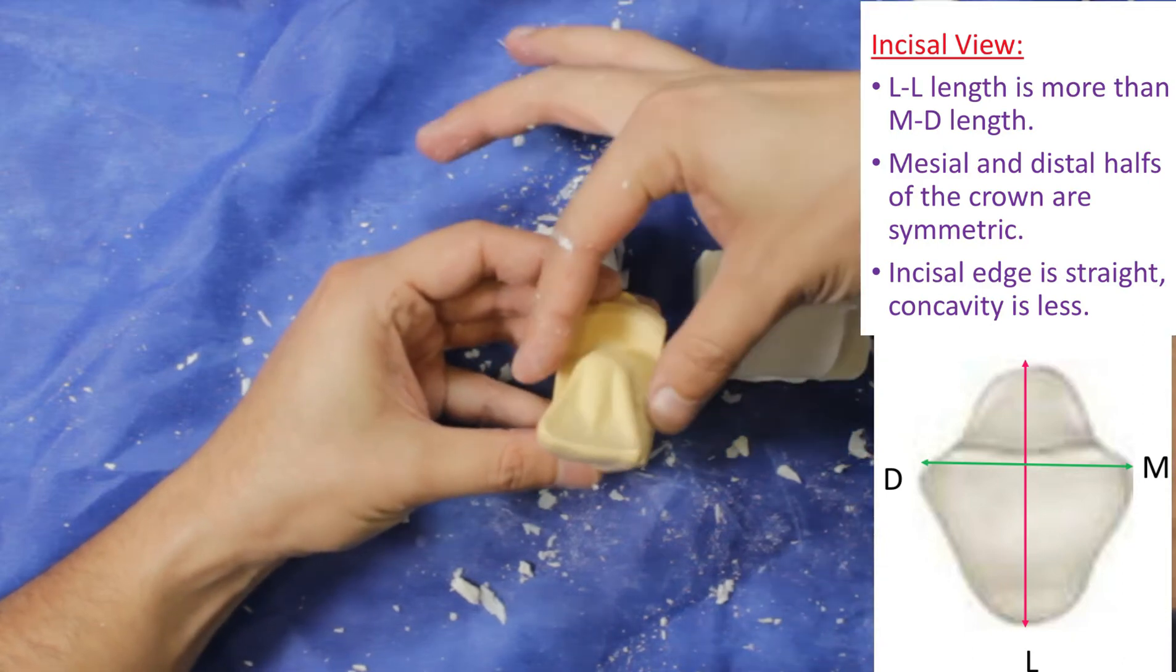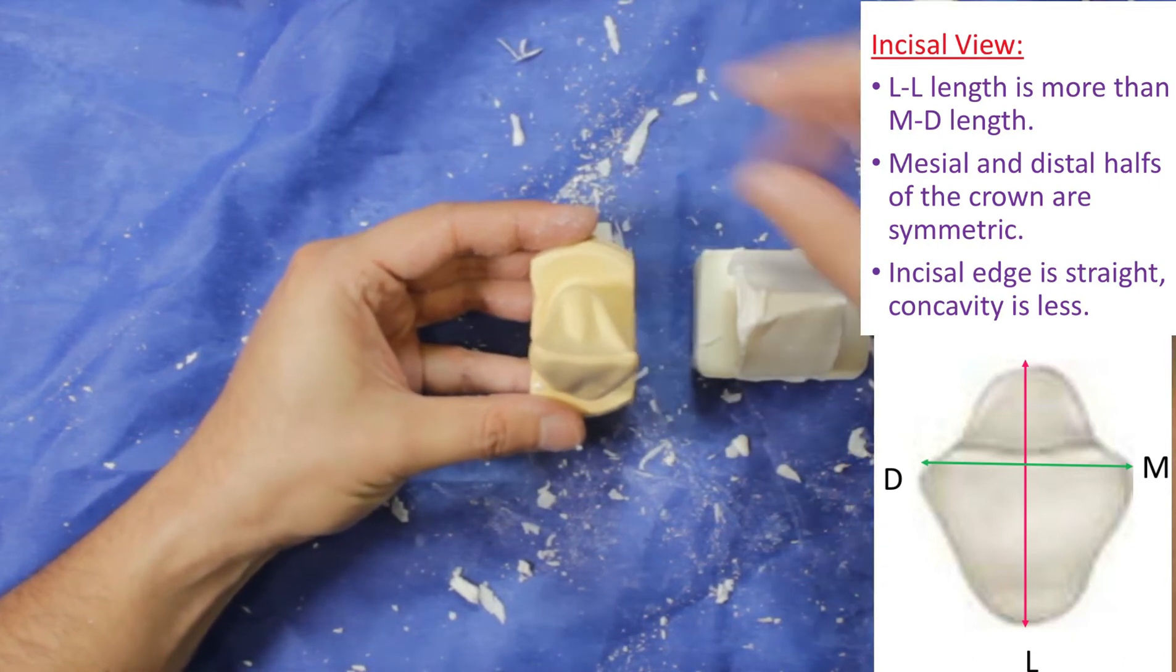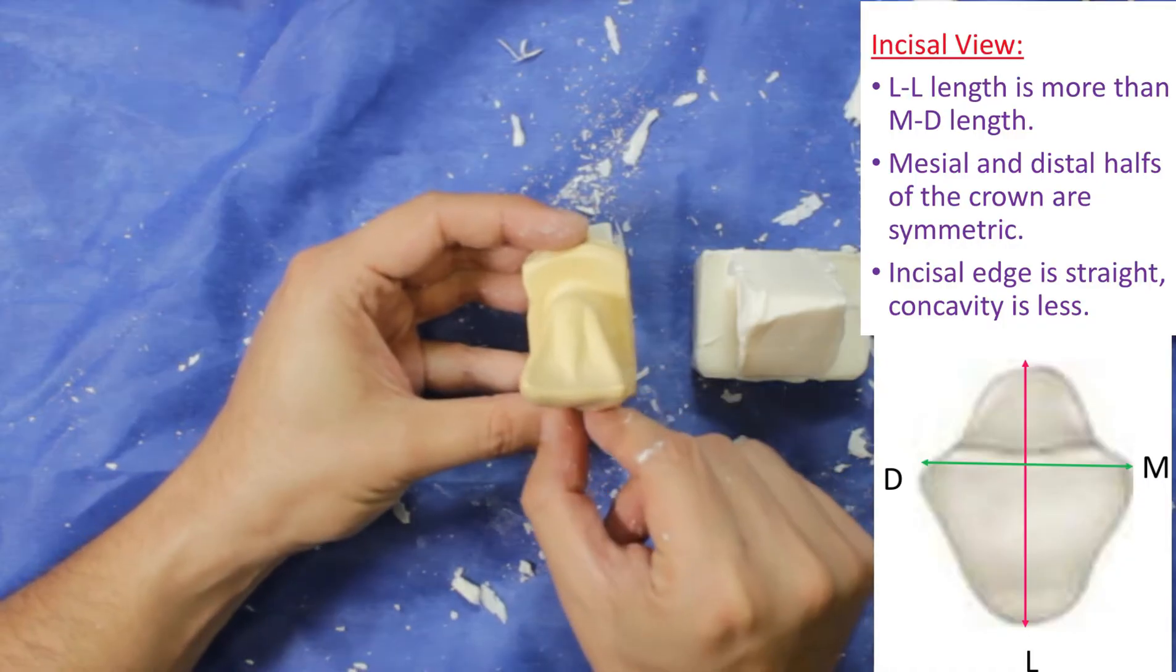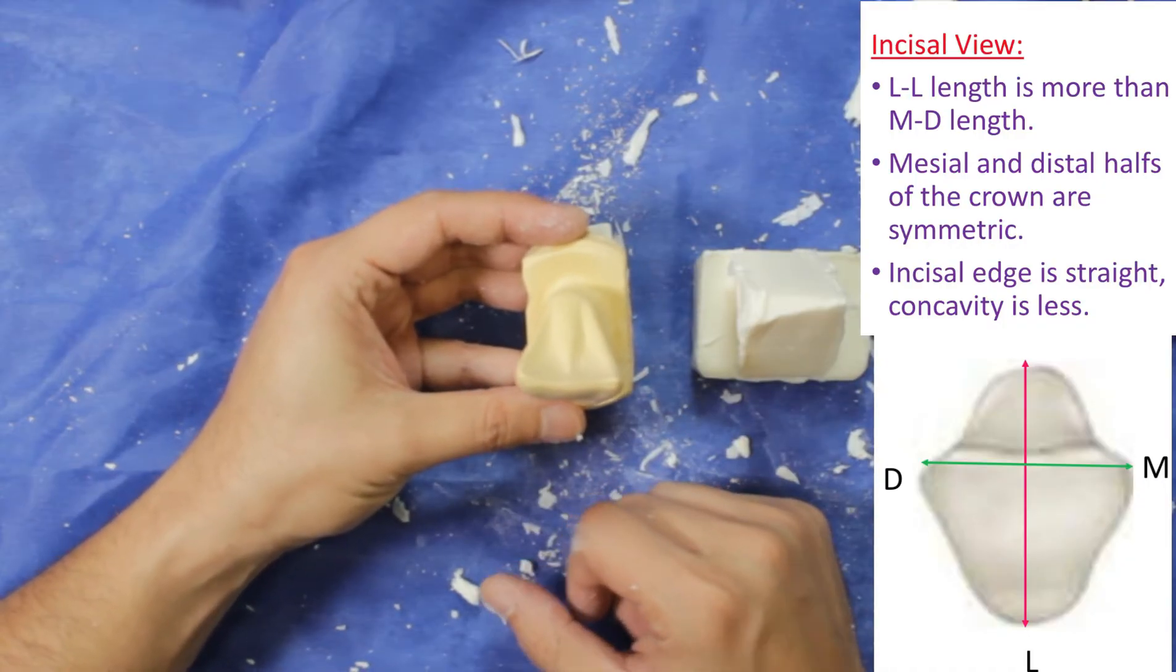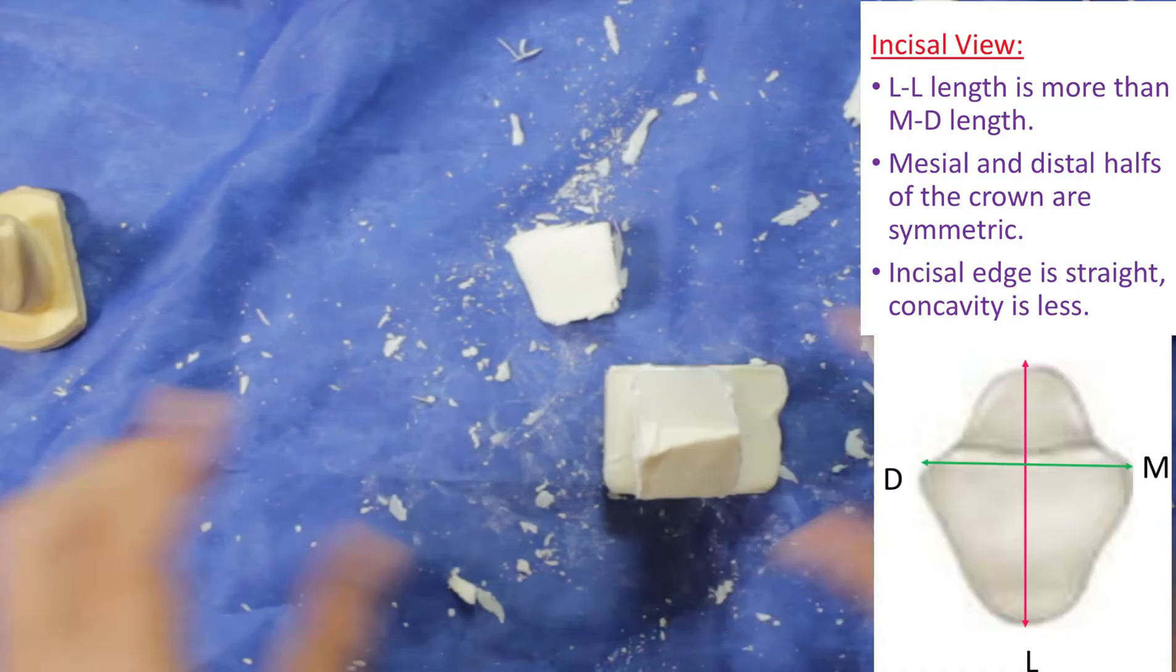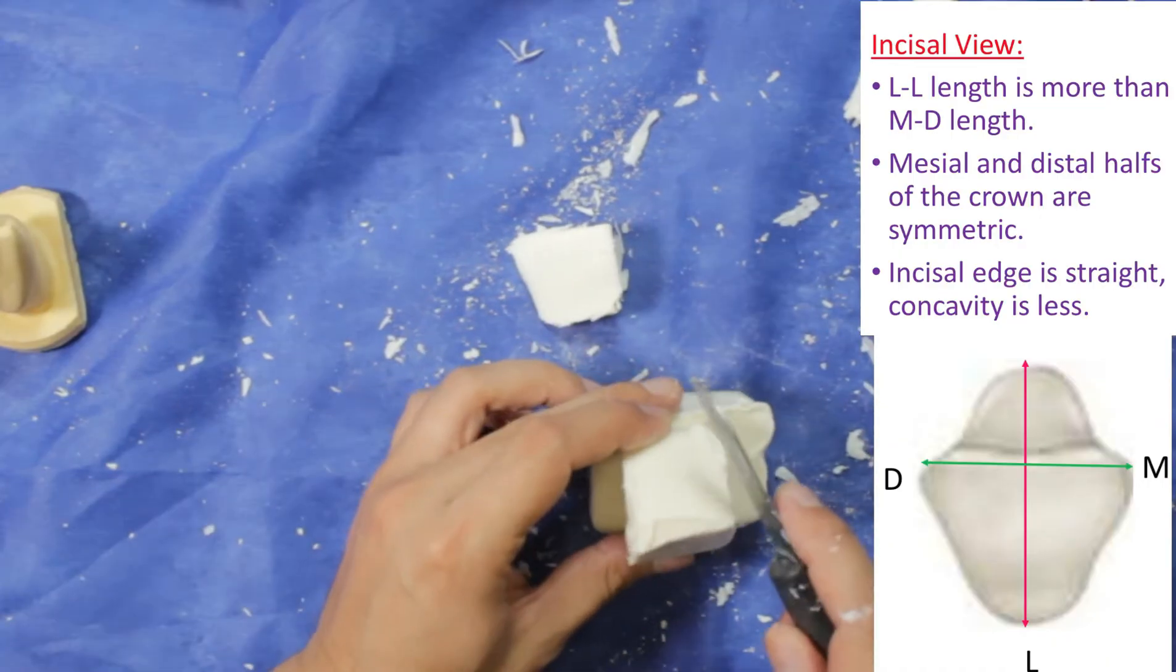From incisal view, labiolingual length is more than mesiodistal length. Mesial and distal half of the crown are symmetric. Incisal edge is straight, concavity is less. Also, the tooth gets narrower to the cingulum, so we have to cut this line.